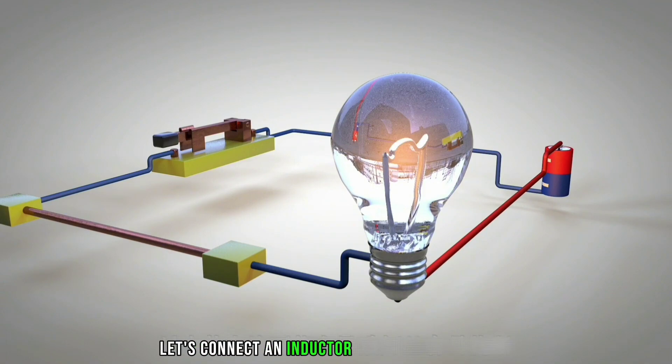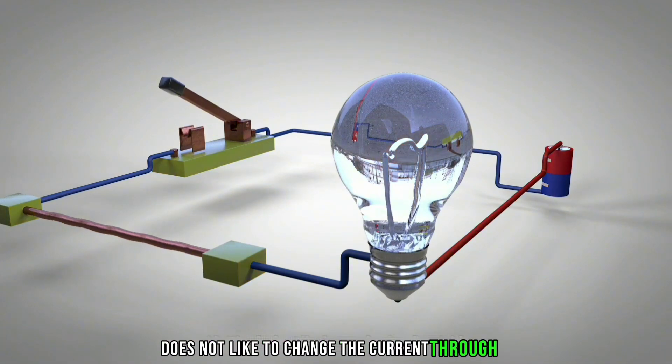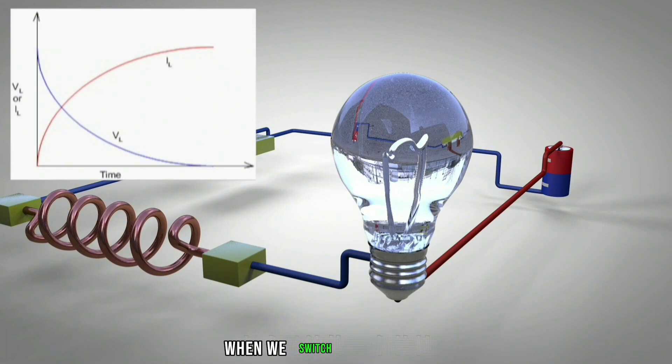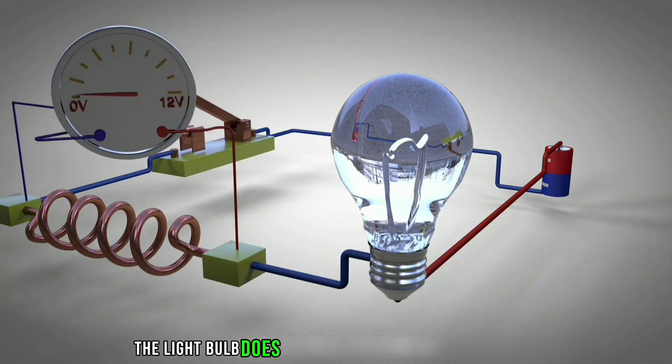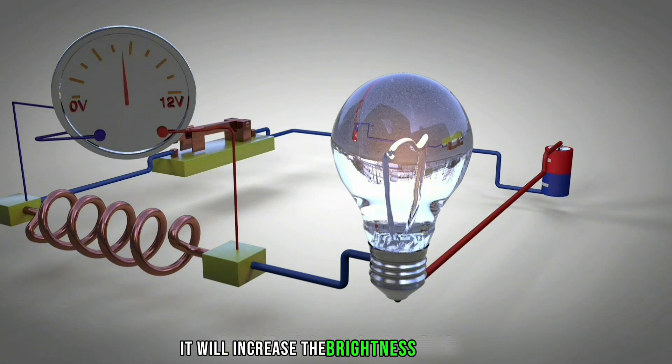Let's connect an inductor in series to this circuit. We know the inductor does not like to change the current through it. Initially, no current flows through the inductor. When we switch on the circuit, the light bulb does not turn on immediately. As before, it will increase the brightness gradually.